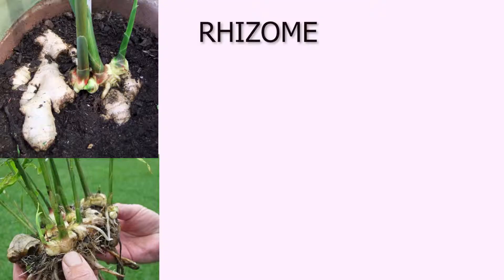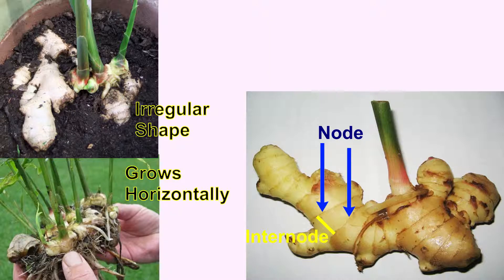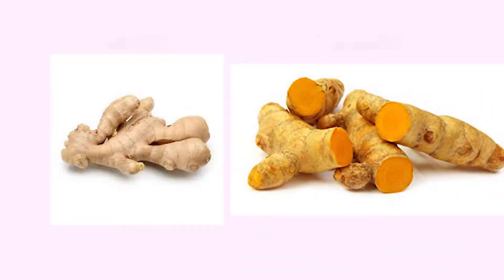Rhizome is an underground thick stem with nodes and internodes. It has scale leaves at the node. It grows horizontally and has an irregular shape. Rhizome have buds which give rise to new stem and leaves. Ginger and turmeric are examples of rhizome.